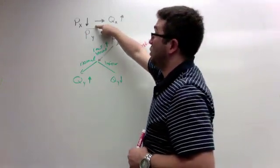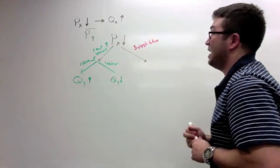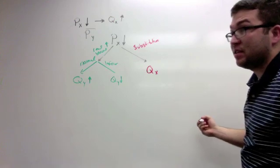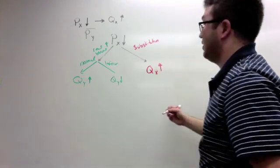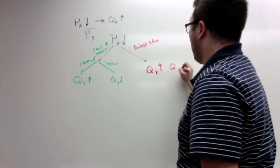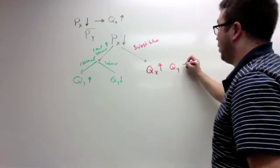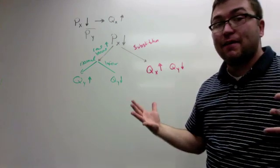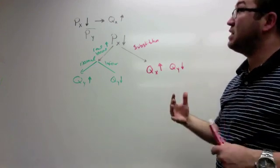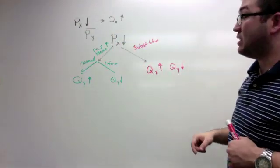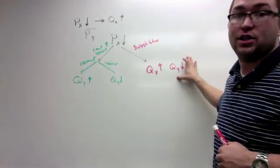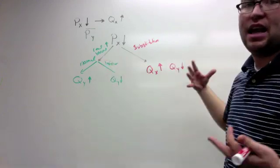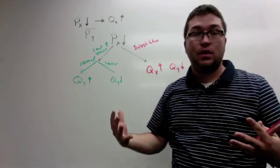If the price of good x goes down while good y stays the same, the quantity of good x is going to go up because it is relatively cheaper, meaning that the quantity of good y is going to go down. So as you can see, we're going to have conflicting effects on how the price of good x affects the quantity of good y consumed in the market, and this is going to depend on which effect has a greater impact — whichever magnitude is bigger.